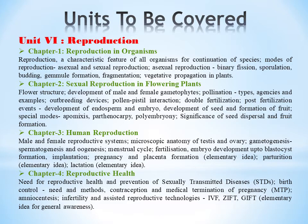We'll also learn about the importance of seed dispersal and fruit formation. Chapter 3, human reproduction. Here we'll learn about the male and female reproductive system, microscopic anatomy of testis and ovary. Then we'll also learn what is gametogenesis, spermatogenesis, and oogenesis.